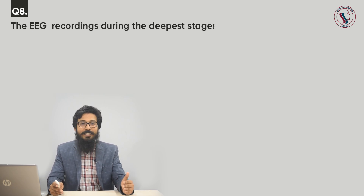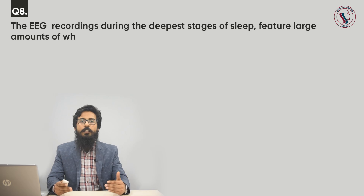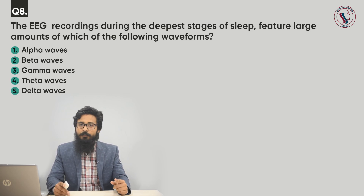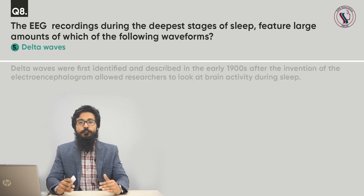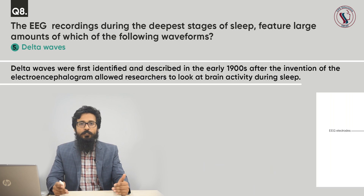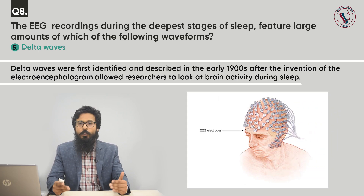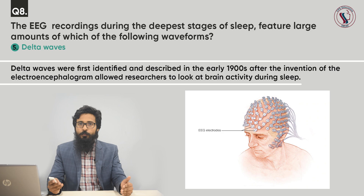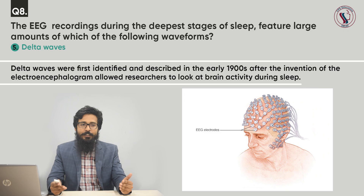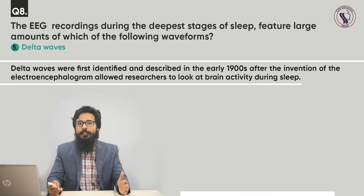Question number eight. The EEG recording during the deepest stage of sleep features a large amount of which of the following waveforms? Options: alpha wave, beta wave, gamma wave, theta wave, and delta wave. The correct answer is delta wave. Delta waves were first identified and described in the early 1900s after the invention of the electroencephalogram allowed researchers to look at brain activity during sleep.